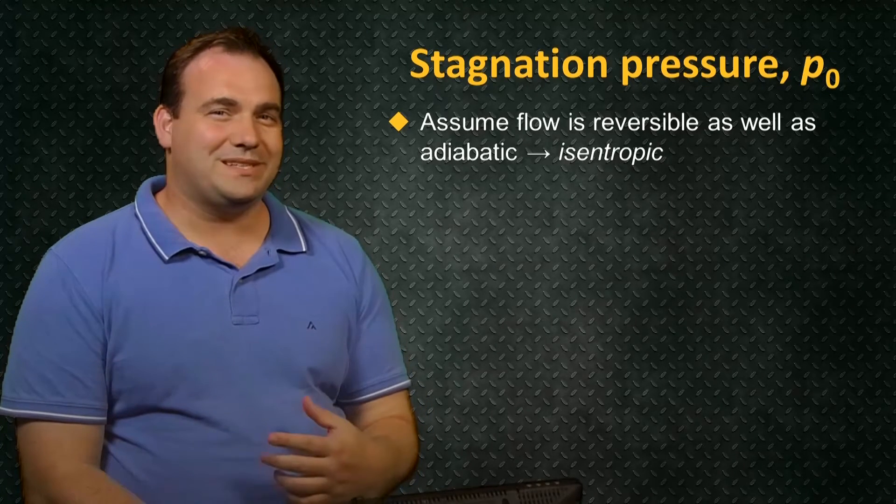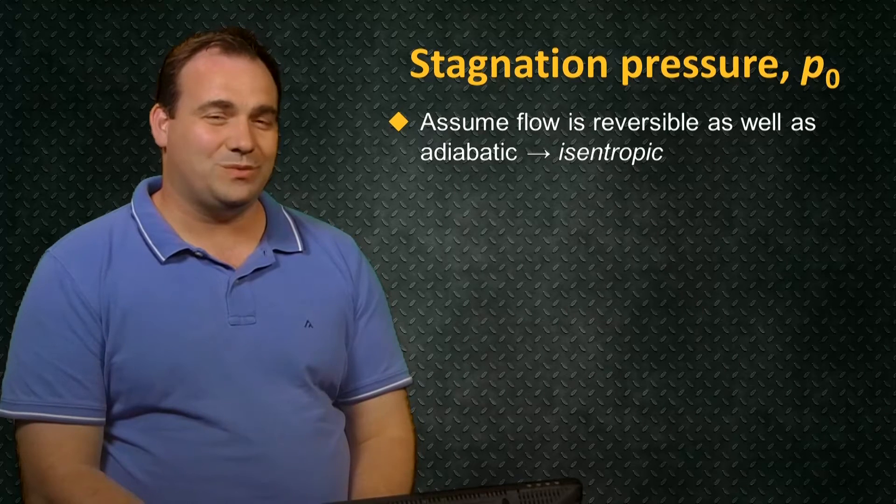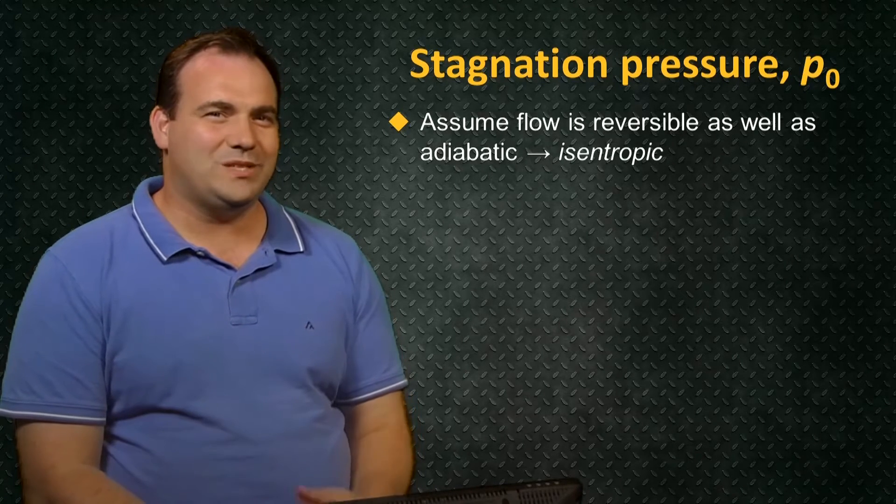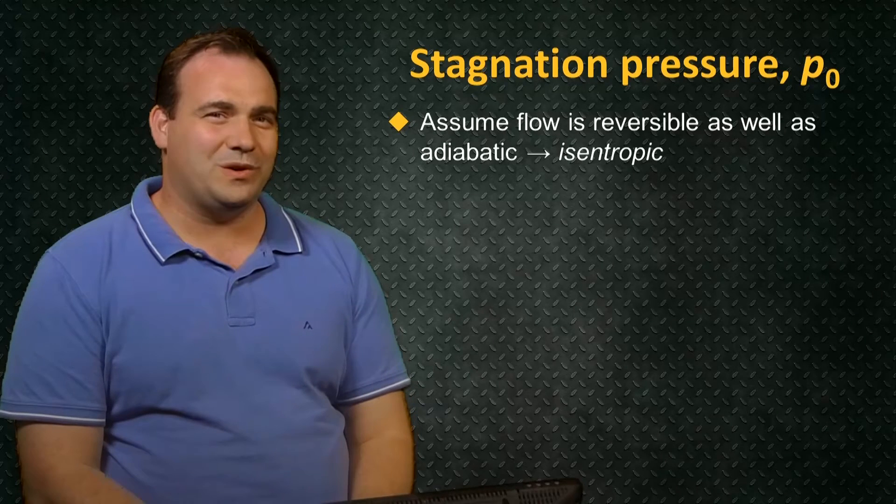We assume that the process is reversible as well as adiabatic, making it isentropic. This means we can make use of the isentropic flow relations.